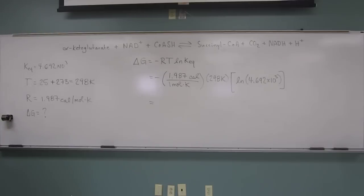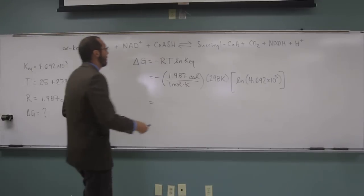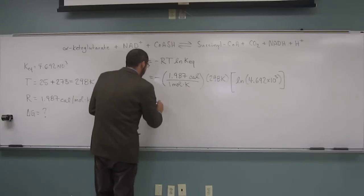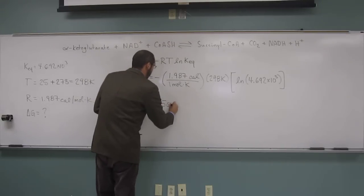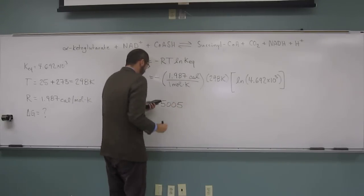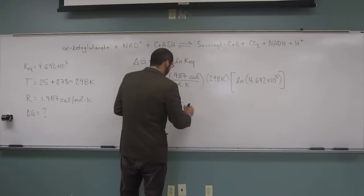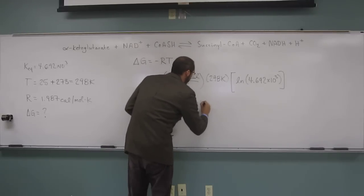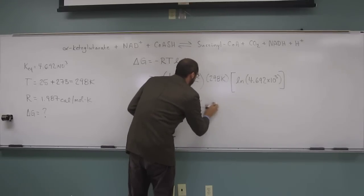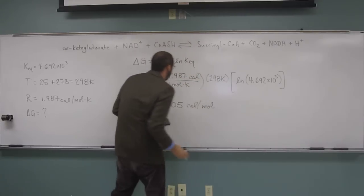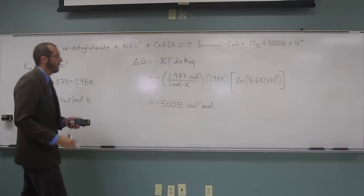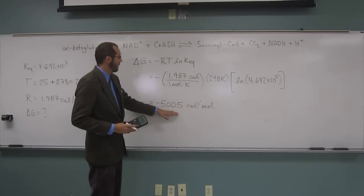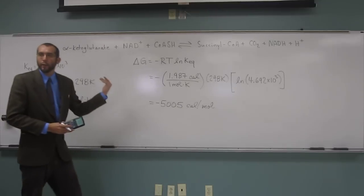Okay, so we want this to three significant figures, but the calculator gives us a bunch of numbers, so we're going to just write down some of them and then we'll figure it out later. So cals per mole. So I put negative 5,005 cals per mole,